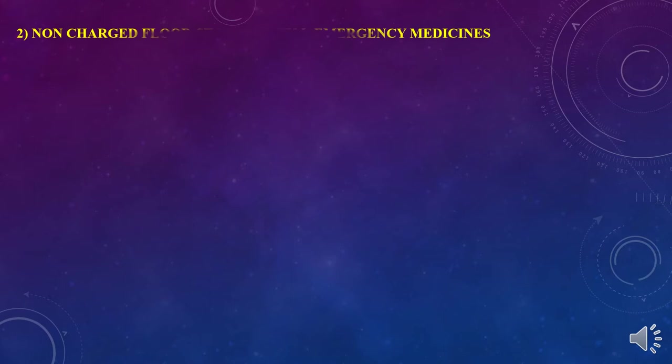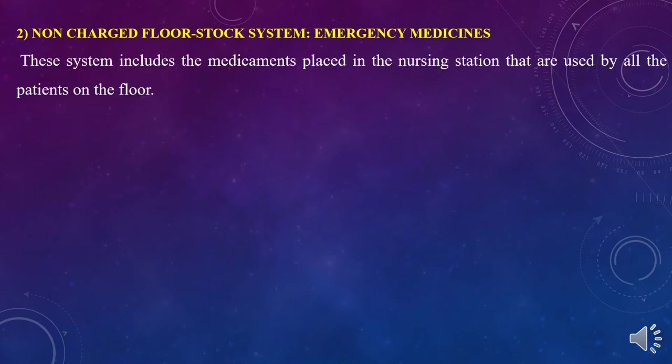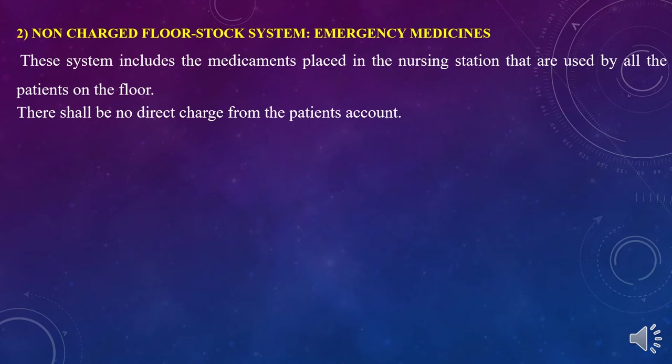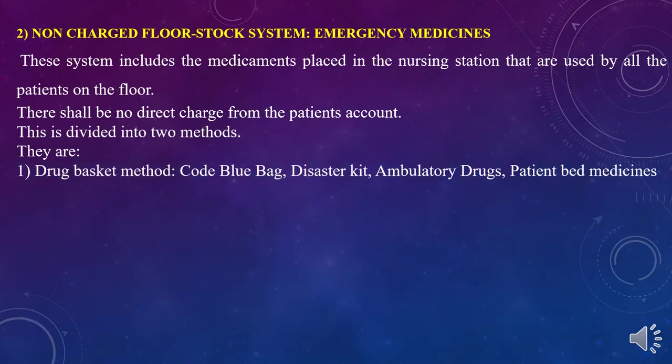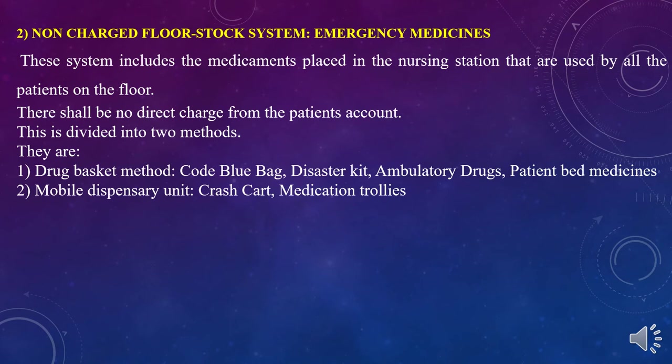The non-charged floor stock system or emergency medicines system includes medications placed at the nursing station used by all patients on the floor, with no direct charge to the patient's account. This system is divided into two parts: the drug basket method and the mobile dispensary unit method. The drug basket method includes examples like the code blue bag, disaster kit, and ambulatory drugs. The mobile dispensary unit includes the crash cart and medication trolley.